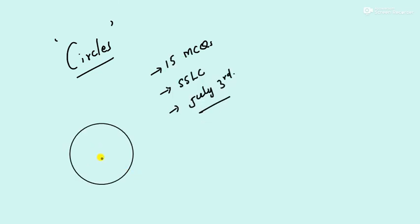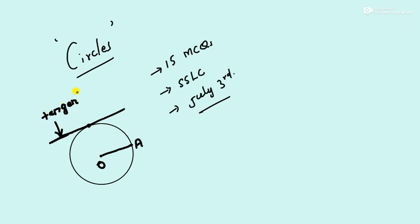If you see here, this is a circle. If I take a point inside at O, the distance from O to the circle is called the radius. A is a point on the circle, O is the center. Now if I draw a line which passes through the circle and touches at only one point, the line which touches the circle at only one point, we call it a tangent. If the line passes through the circle and cuts it at two points, we call such a line a secant.